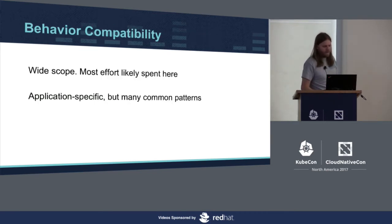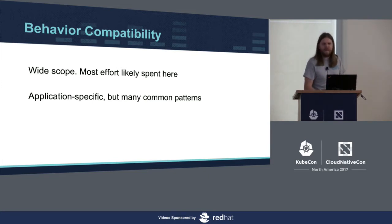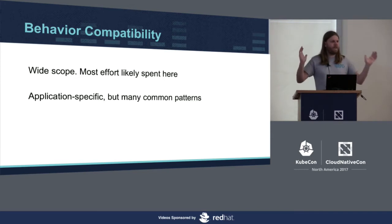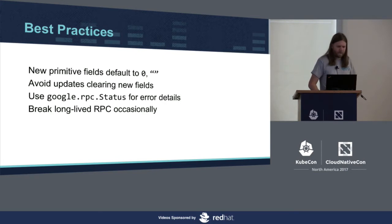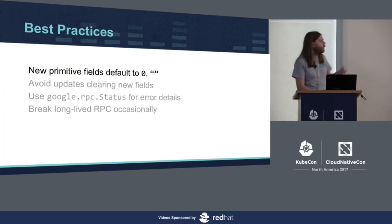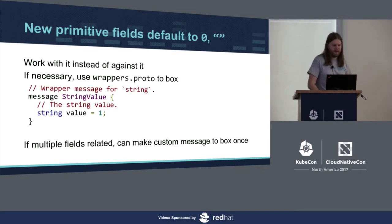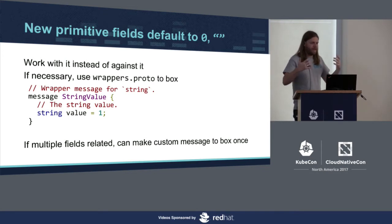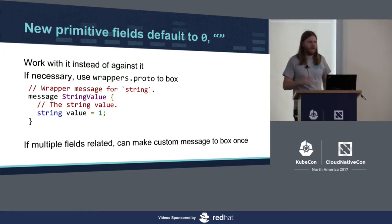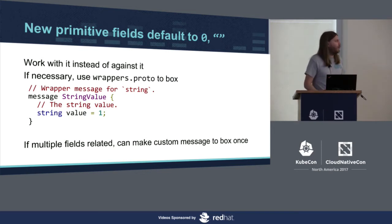Behavioral compatibility is actually really wide in scope. Most of your effort will be spent here. The other stuff — you can add things, that's easy. These are the application-specific pieces, which means I can't necessarily solve all of your problems. But there are some common patterns. Starting with new primitive fields: in Proto 3, the default is zero or empty string for each primitive. The point is to accept that — don't try to avoid it just because you think it's silly. If you let the zero value be the 'I don't care' or default value, you'll probably have a better time.